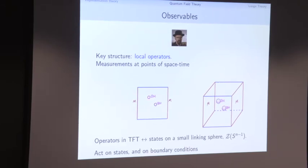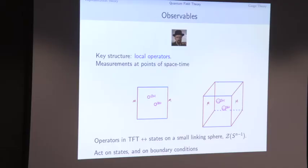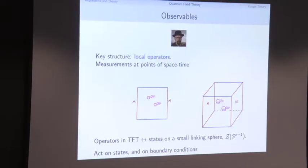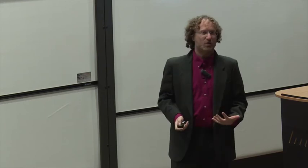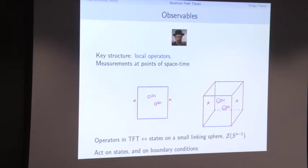So we have a notion of operators: states on a sphere. They really give operators: this cobordism picture tells you they act on states or on boundary conditions. Now, if I have operators I should be able to compose them. The physics picture for composing operators is the operator product expansion: two operators at points x and y collide and produce new operators. A topological picture: cutting out little disks, and two operators O₁ and O₂ seen from far away merge to make O₁ ⋆ O₂. This is also the pair-of-pants picture.